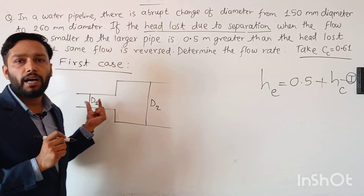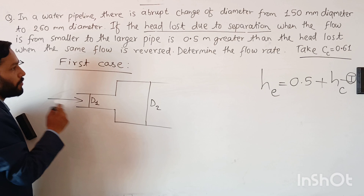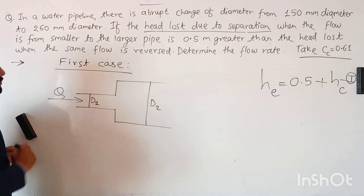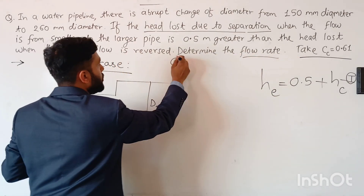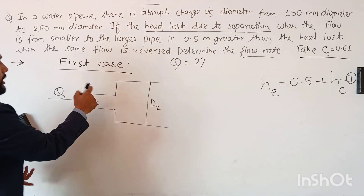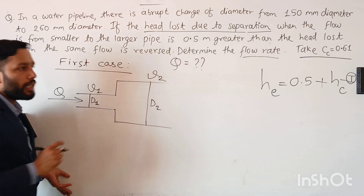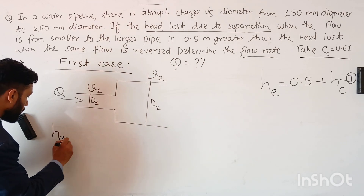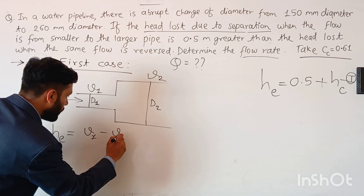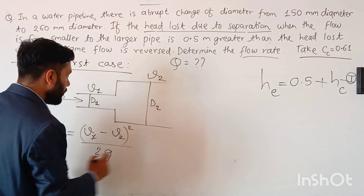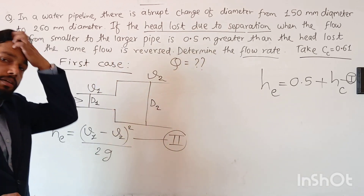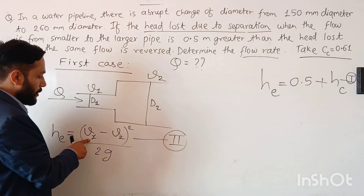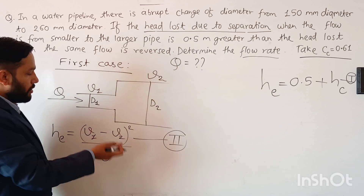I write it d1 and d2. I always write the suffix 1 and 2 to incorporate the direction of flow. The flow is from 150 mm diameter to 260 mm diameter, so I write discharge q here and you are supposed to find out the flow rate q. In this pipeline there is v1 and in this pipeline there is v2. The head loss due to sudden enlargement is needed here, and this equation is: h_e = (v1 − v2)² / 2g. This is called point loss or loss due to separation.